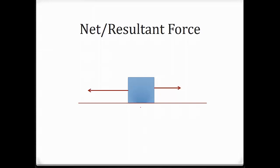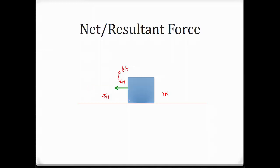Or if they are opposing — one pulling towards the left, the other pulling towards the right — the longer arrow could be 5 Newton and the shorter one 3 Newton. So 5 minus 3 gives you 2 Newton. In this case, it is considered negative 2 Newton because the negative indicates the direction, which is left. So the resultant force is this green arrow, which is negative 2 Newton.